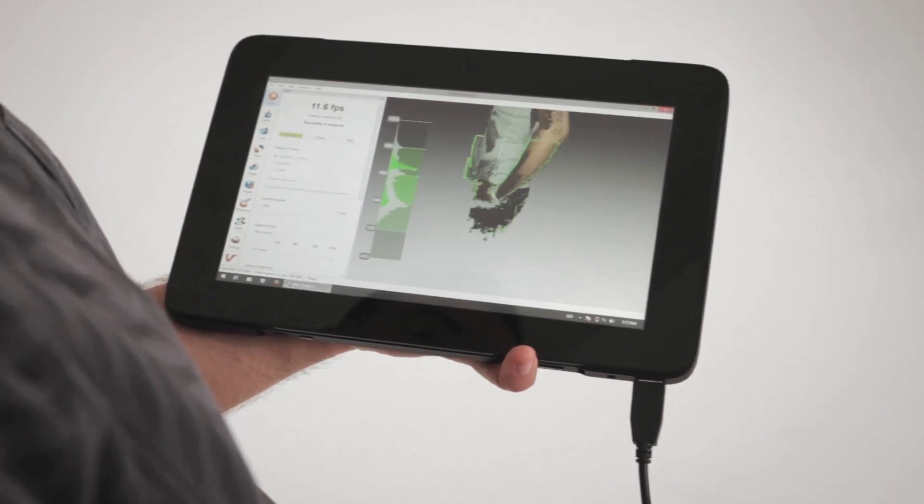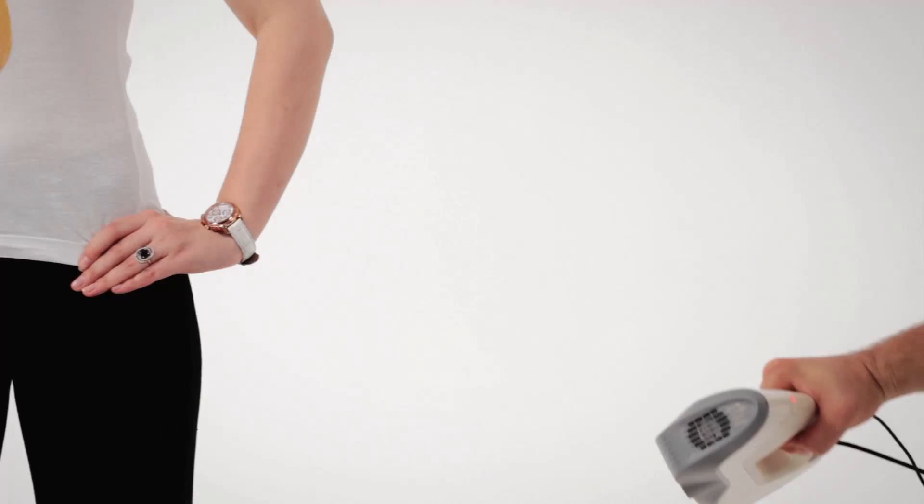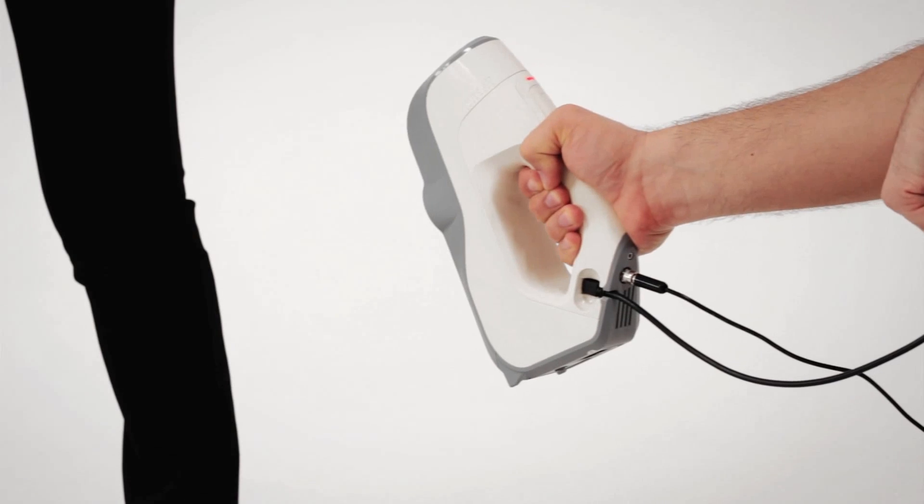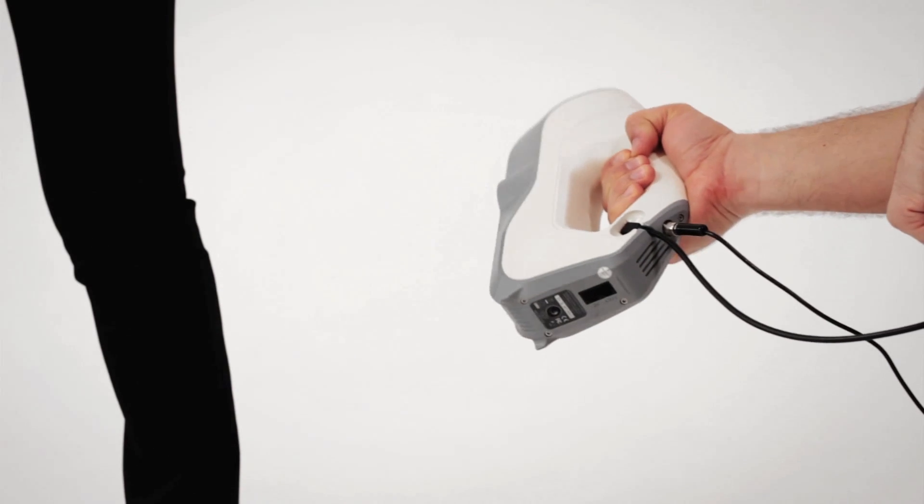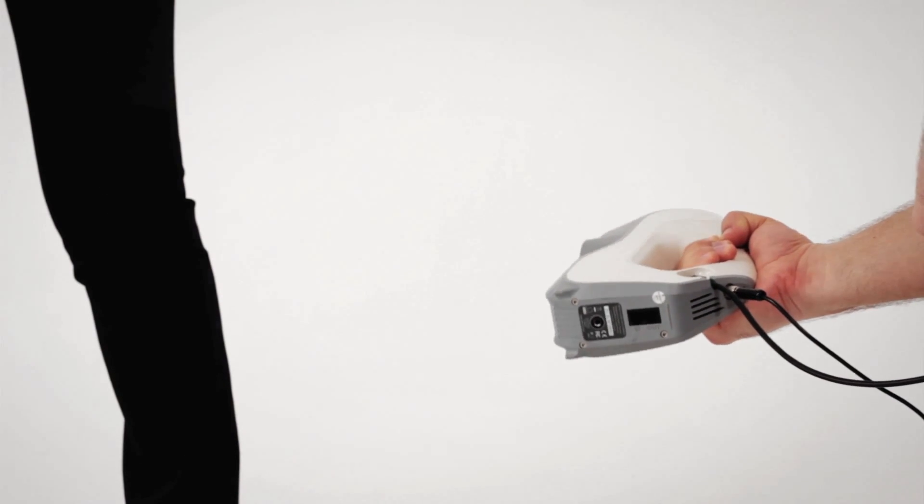Always remember, to get a good scan, you must change the angles of the scanner, so it sees the person from every perspective. Legs are generally the most still part of the body, so you can scan them separately. However, scanning the whole body in one scan is also an option. Don't forget to scan the inner side of each leg.